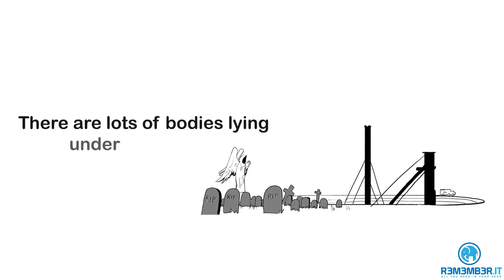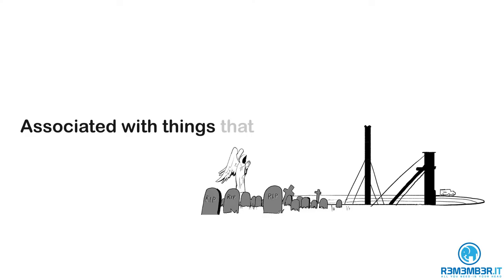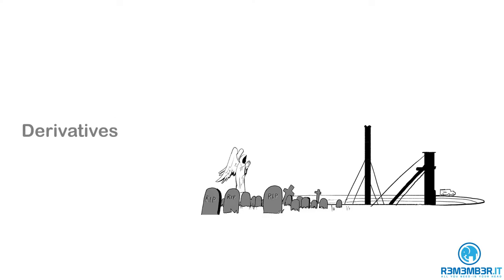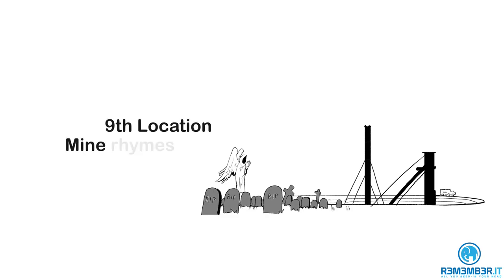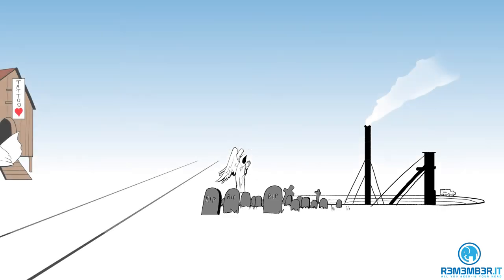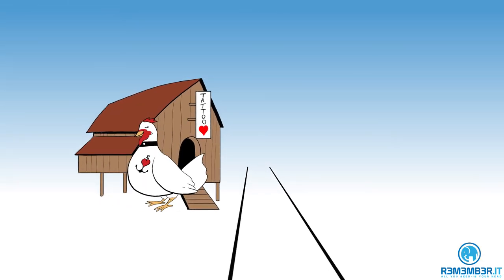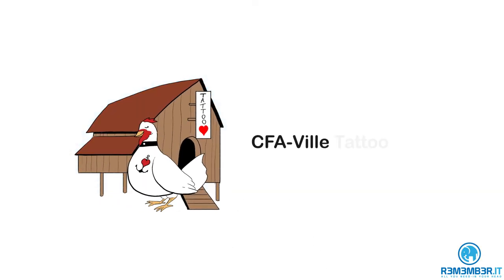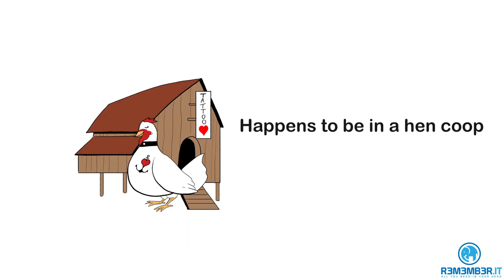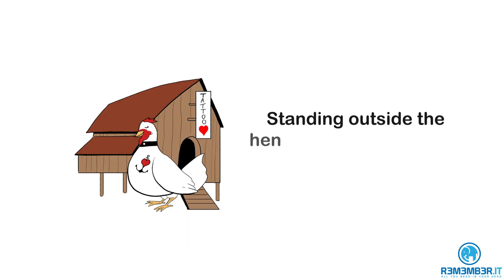The ninth location is the CFAVIL mine and graveyard. Not only do they conduct mining operations here, but the mine doubles as a graveyard, so there are lots of bodies lying under the ground. Therefore, it is associated with things that are underlying, and is thus where the derivatives part of the syllabus is covered. You know it's the ninth location because mine rhymes with nine.